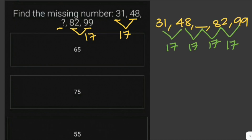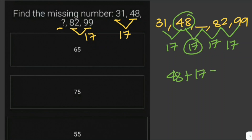So what could this number be? All you have to do is add 48 and 17, and we get the missing number: 65.